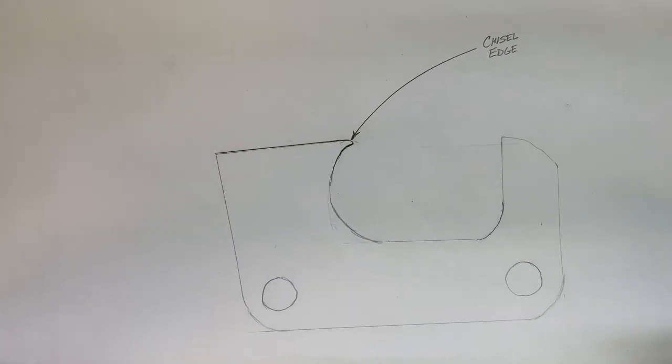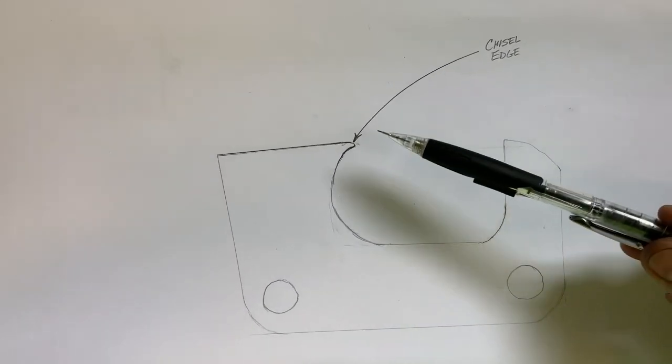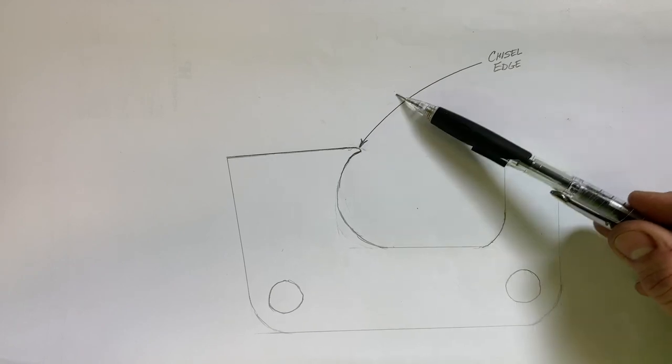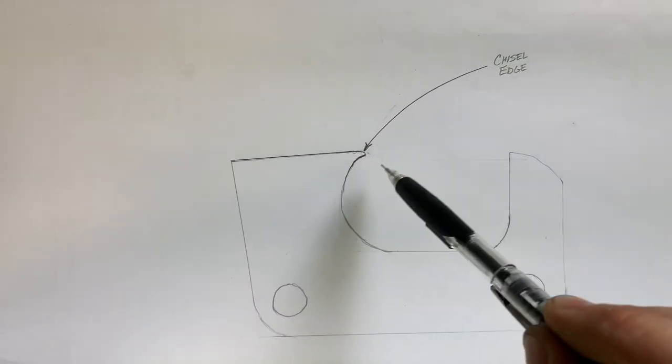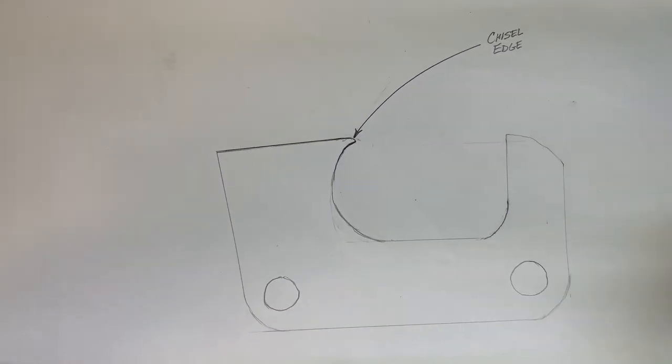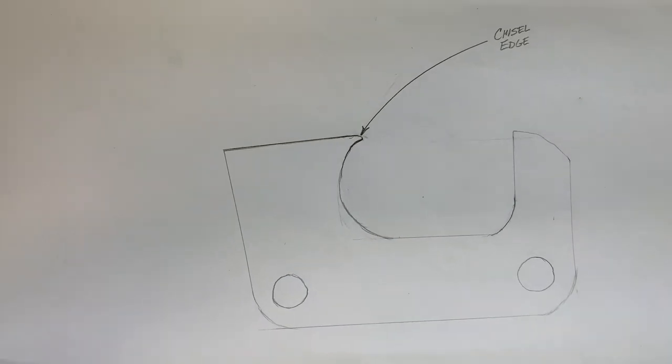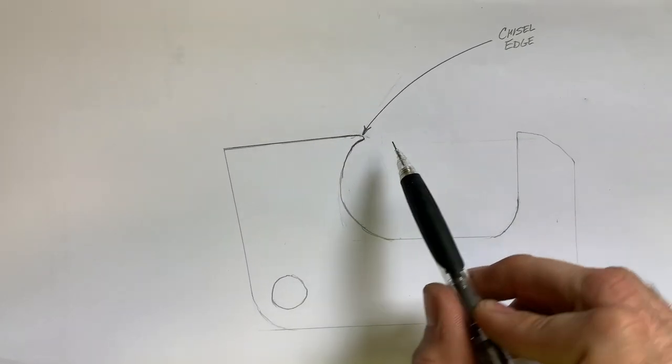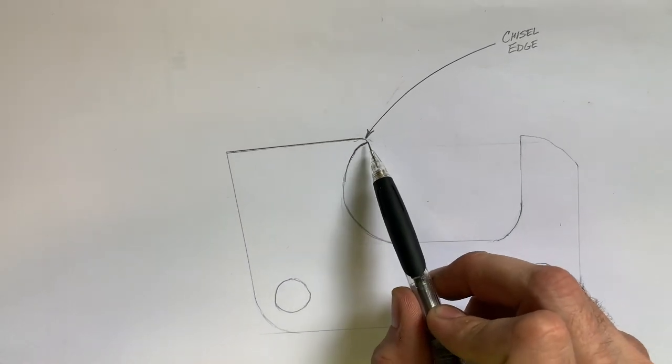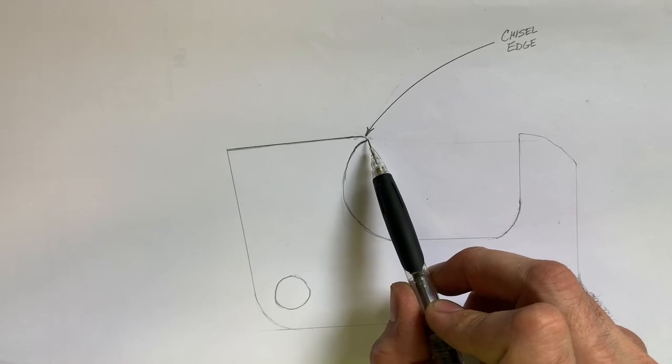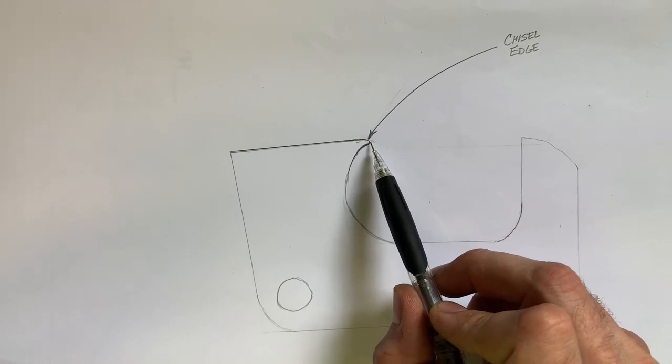If you see in this drawing I made here, here's your chisel edge, working corners in there. I just don't have a 3D of it. But you'll start sawing the wood and it'll become dull. And the first thing that goes is the working corner in the chisel edge, right here.